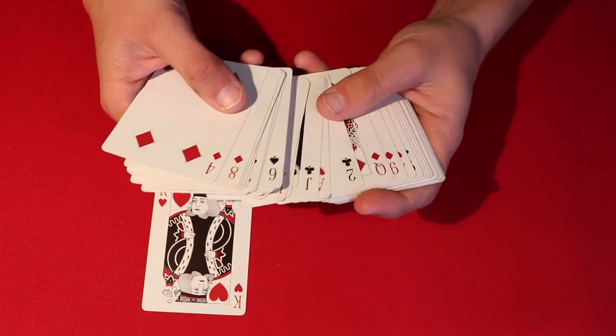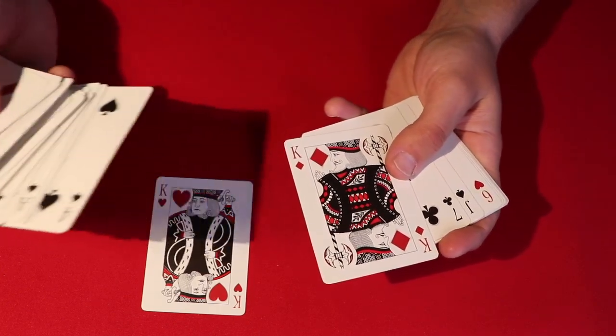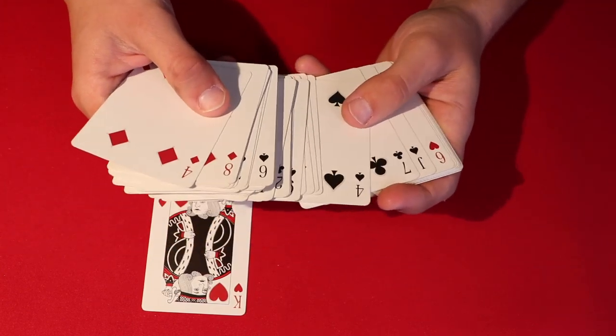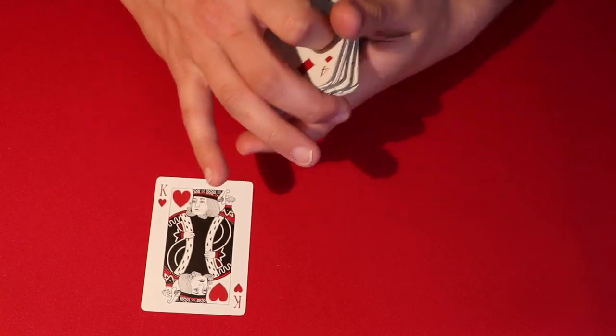So what you do is you go to the deck and you tell your spectators to go ahead and look for it really quick. In this case, the soulmate of the king of hearts, the king of diamonds. You tell them alright, so it's somewhere in the middle of the deck and you don't really know exactly where it is.